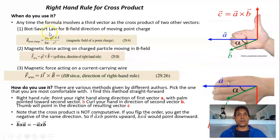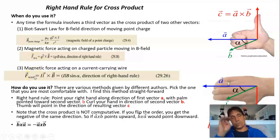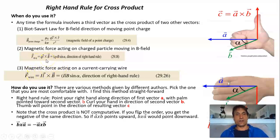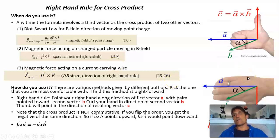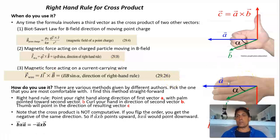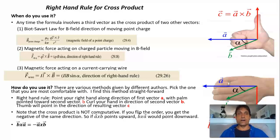You'll use this right-hand rule for the examples here, showing how to get the force on a moving charge and the force on a moving wire. Both of them involve the cross product of two vectors: V cross B gives you the force on a moving charge, and the current direction crossed with B gives you the force on a wire. This is the right-hand rule I use. The author has his hand oriented a little differently — if you prefer his way, use it, but just get good with one way.